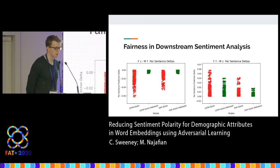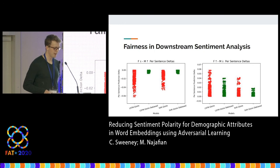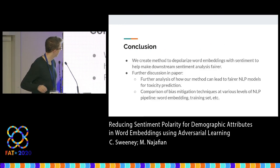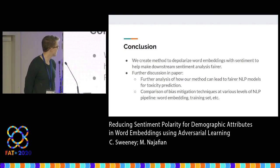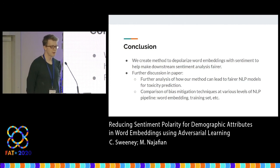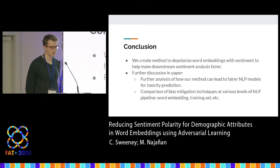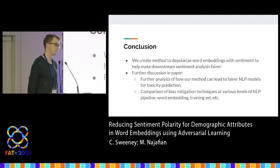We have a similar story comparing metrics for female versus male names. In conclusion, we created a method to depolarize word embeddings with sentiment to help make downstream sentiment analysis fairer. The paper further discusses how these methods can lead to fairer toxicity prediction models, and provides comparison of bias mitigation techniques at various levels of the NLP pipeline — for example, comparing debiasing word embeddings versus debiasing the training set.